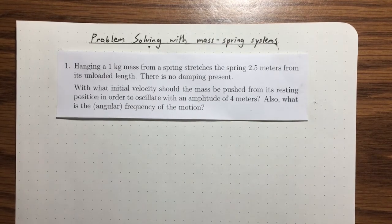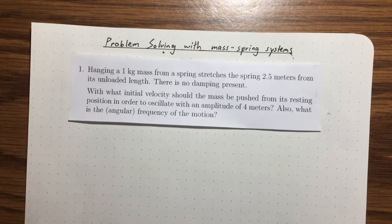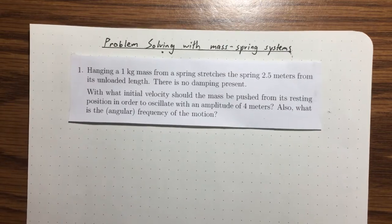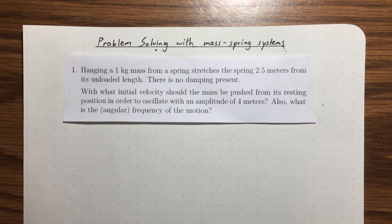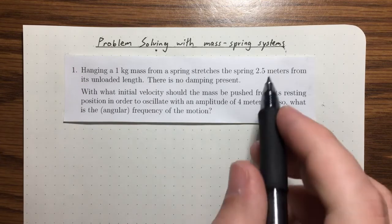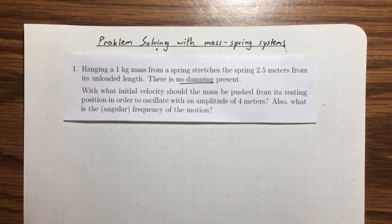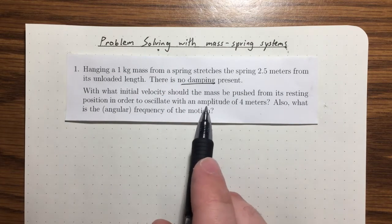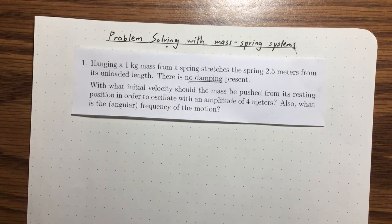In this lecture we're going to be doing a bunch of problems relating to mass spring systems. The idea is to apply as much of the theory we learned in the previous lecture as we can. Here's the first problem: hanging a one kilogram mass from a spring stretches the spring 2.5 meters from its unloaded length, and there is no damping present. We want to know with what initial velocity the mass should be pushed from its resting position to oscillate with an amplitude of 4 meters, and also what is the angular frequency of the motion.